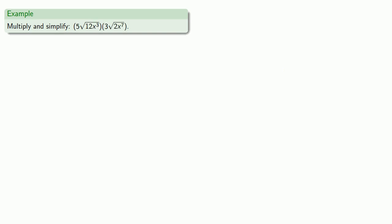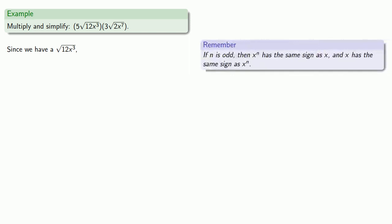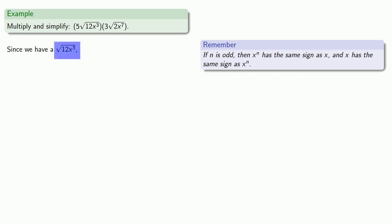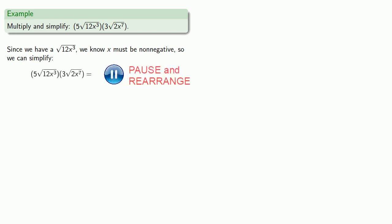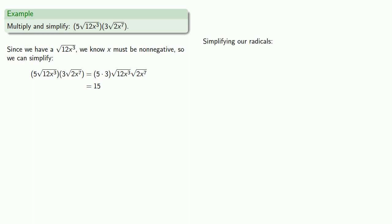Now for something more complicated. Since we have a square root of 12x cubed, the radicand 12x cubed must be non-negative. If n is odd, then x to the power n has the same sign as x, so since we need 12x cubed to be non-negative, x must be non-negative. We rearrange our factors and multiply 5 times 3 outside the radical. It's easier to simplify the radicals first — so let's simplify square root of 12x cubed by removing perfect square factors.